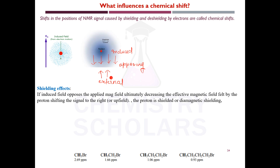Think of it like a bulletproof jacket. If you're wearing a bulletproof jacket and someone shoots at you, you are saved because the jacket shields you. The electron cloud surrounding the nucleus is like that bulletproof jacket — the external magnetic field is the bullet, the nucleus is you, and the induced magnetic field is the jacket opposing the impact.